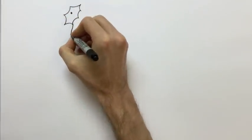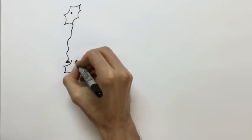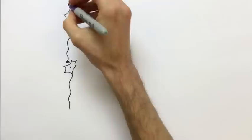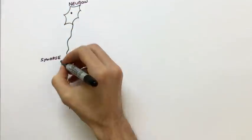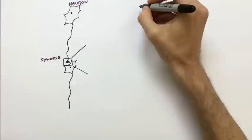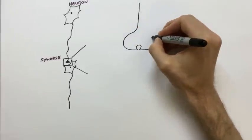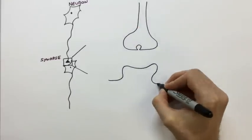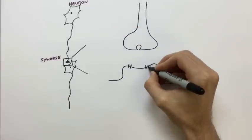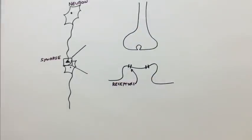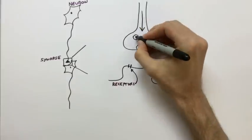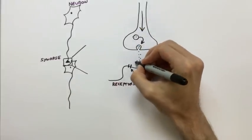Neurons communicate at synapses, a specialized structure where they share information. The upstream neuron releases neurotransmitters that the downstream neuron receives via receptors, and this allows brain signals to travel from neuron to neuron throughout the brain.